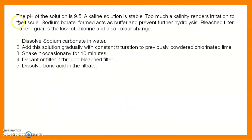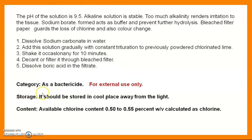The pH for the solution is 9.5 — it is alkaline. The solution is stable, but too much alkalinity causes irritation to tissue. Sodium borate formed acts as a buffer and prevents further hydrolysis. The bleach filter paper guards against loss of chlorine and color change. Procedure: dissolve sodium carbonate in water, add it gradually with constant trituration to the previously powdered chlorinated lime, shake constantly for about 10 minutes, then decant or filter through bleach filter paper. Dissolve boric acid in the filtrate. Label as 'For External Use Only'. Store in a cool place away from light. Chlorine content: 0.50 to 0.55% w/v.